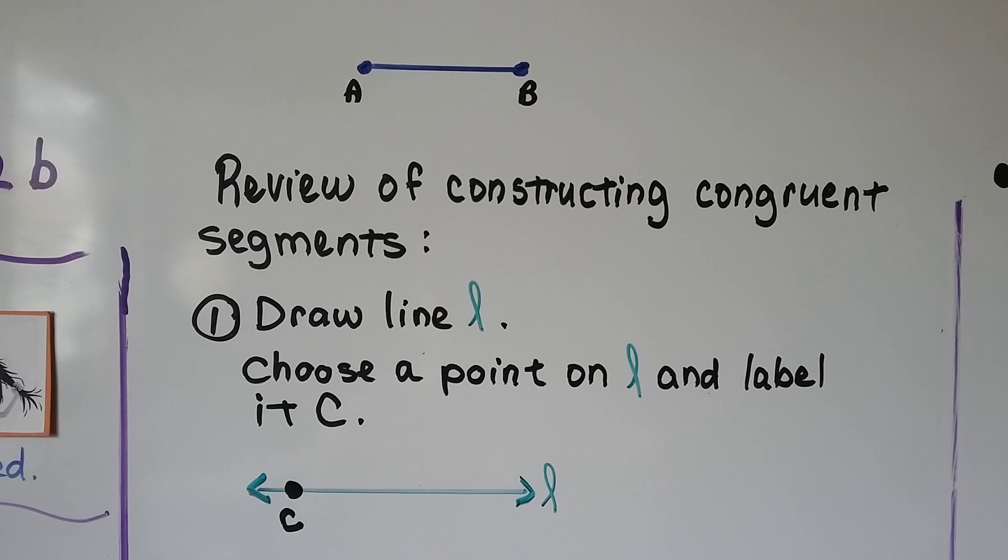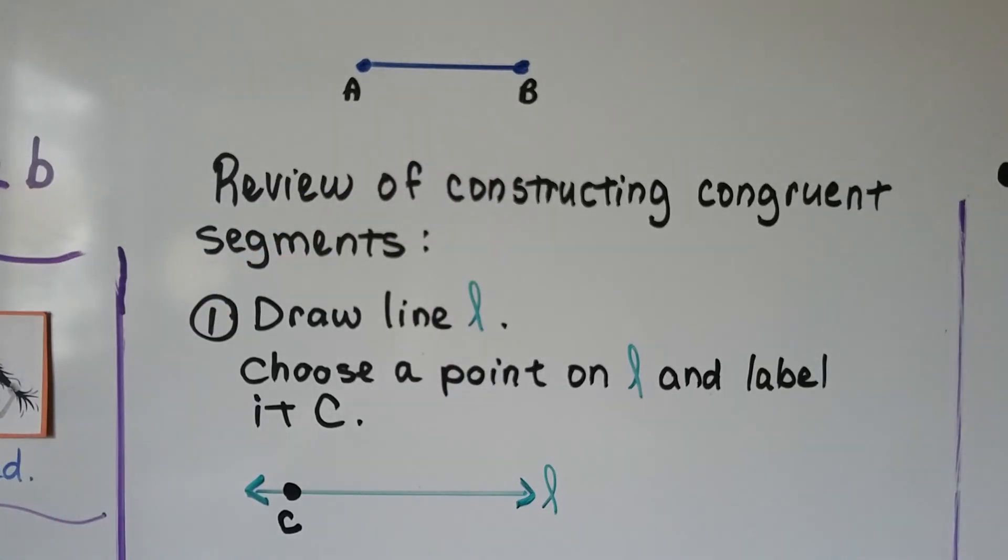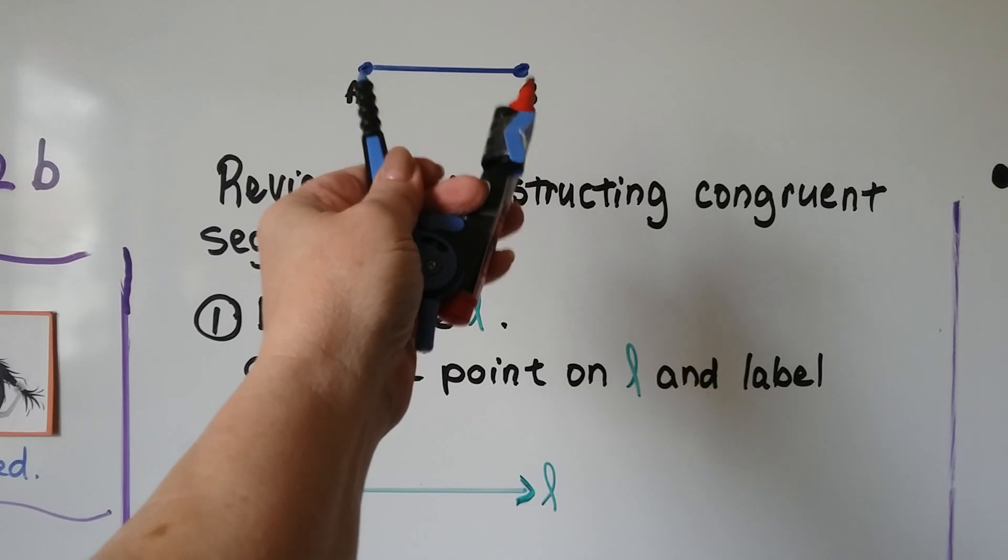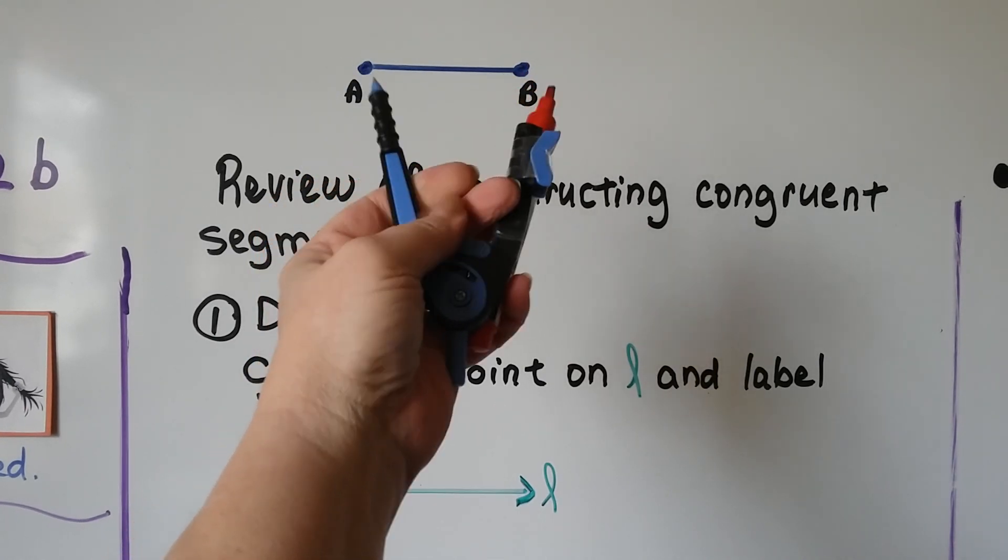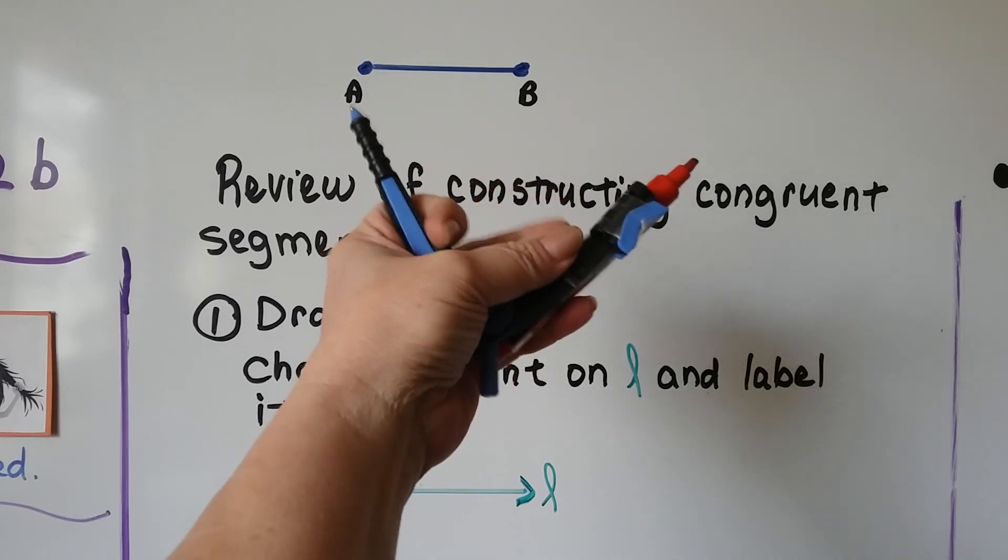The first thing we're going to do is either copy a segment or make a line segment. You don't want it to be too big because you want your compass to be able to measure it. If you make the line segment too big, we'll have to open our compass too wide and then it'll be difficult to handle.